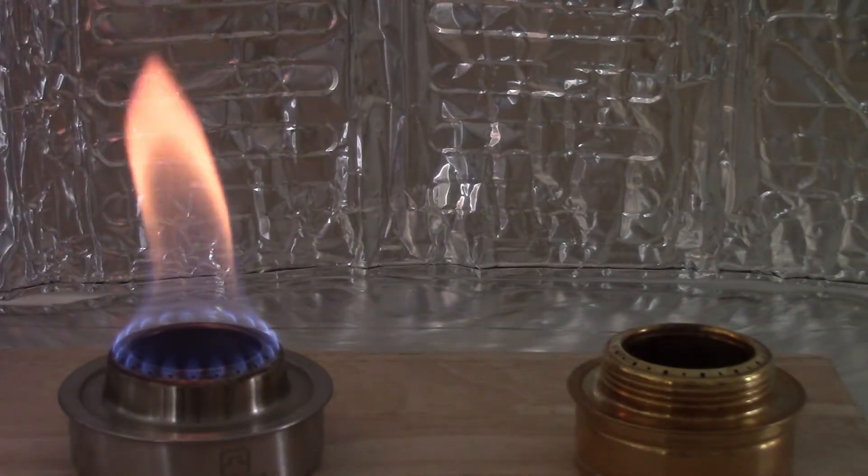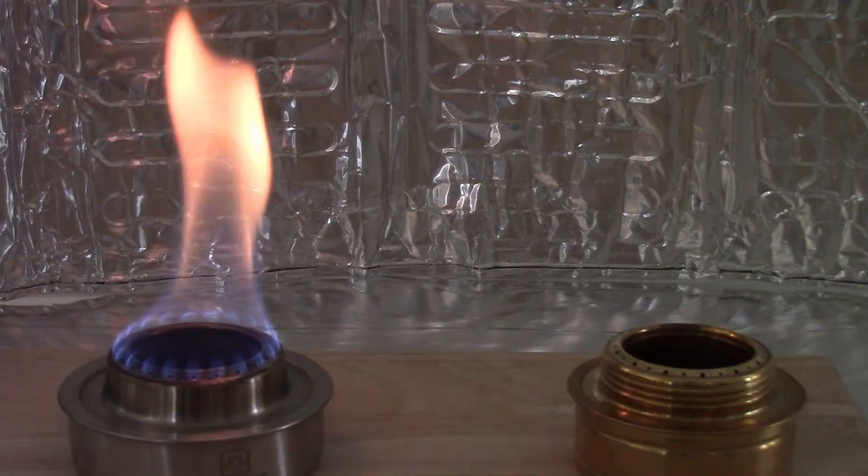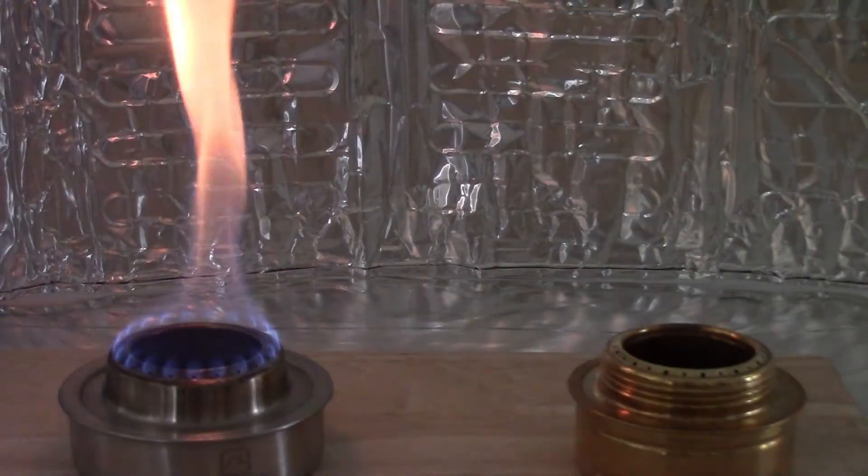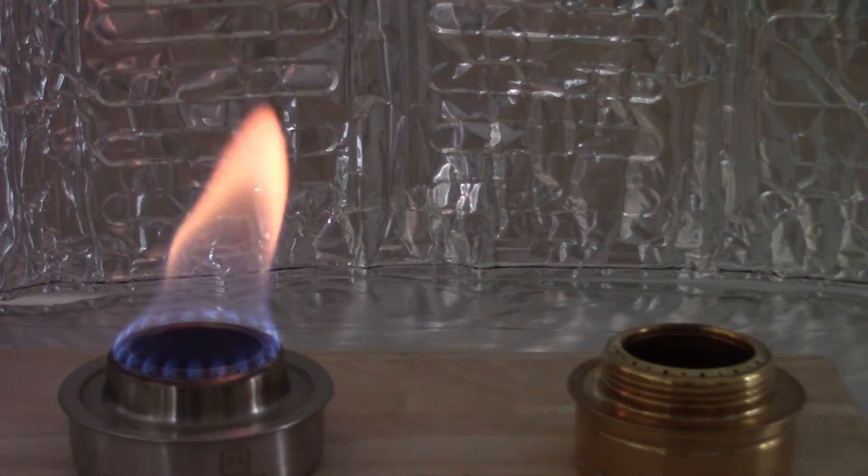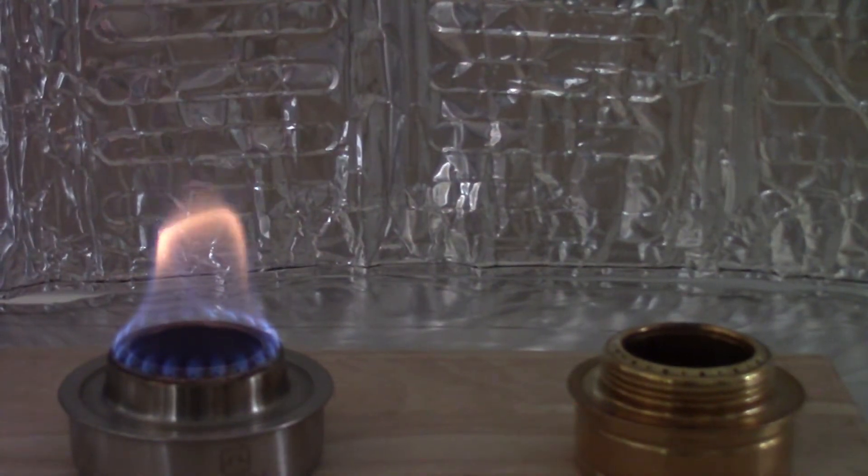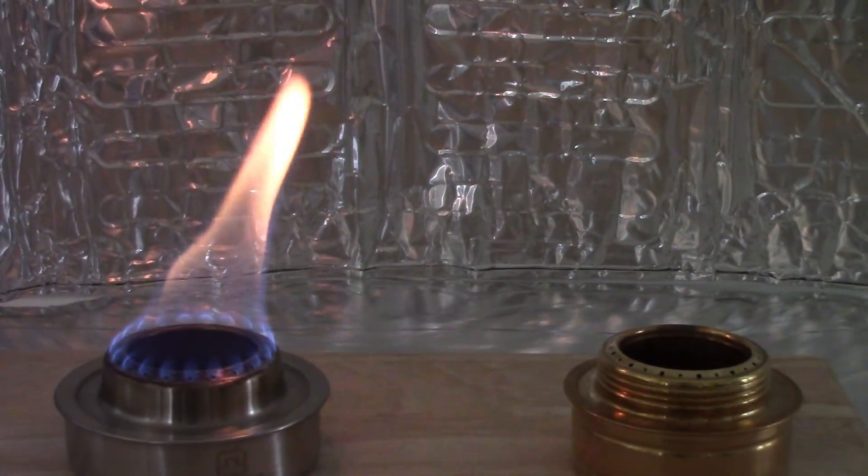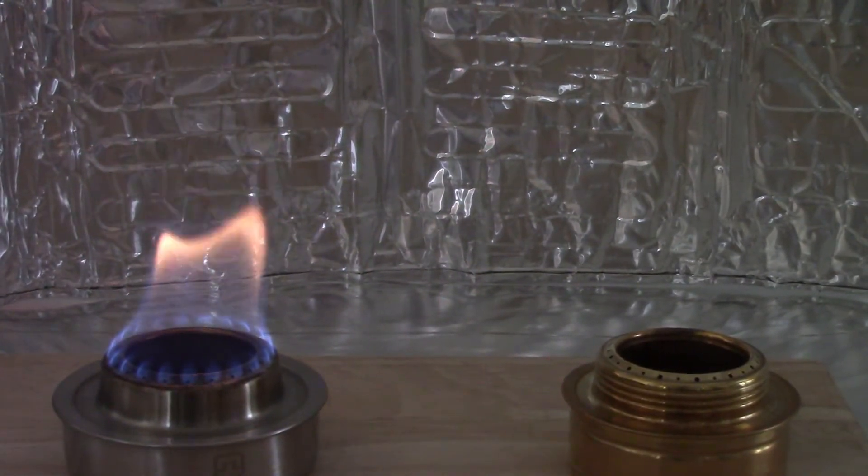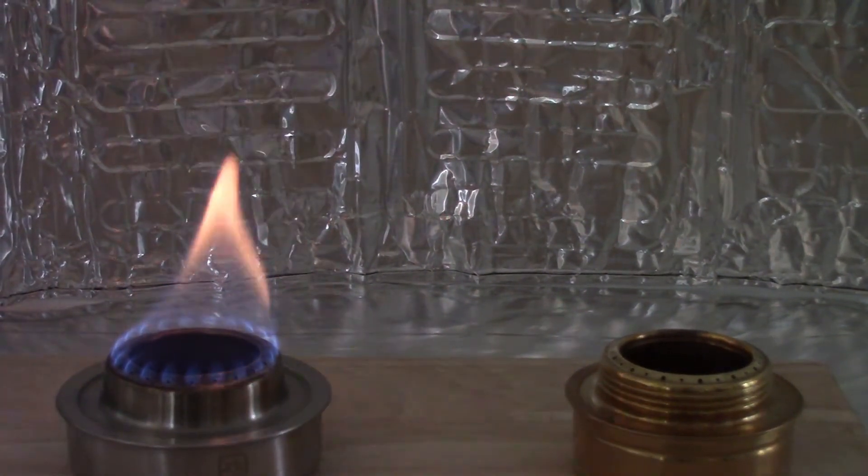It's over 18 minutes now and the stainless steel alcohol stove is still burning strong. So around 25 minutes mark, the flames have started dying down. So it will be safe to say that the stainless steel stove lasted, though it did bloom late, but the flames lasted for a good 24-25 minutes of usable flame.